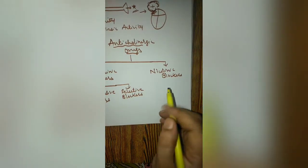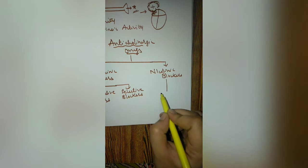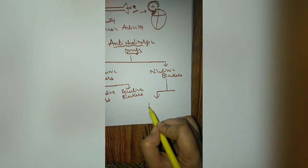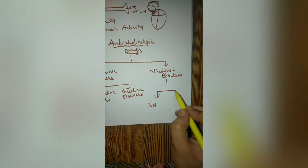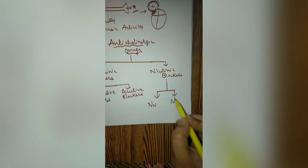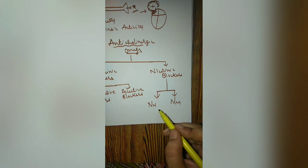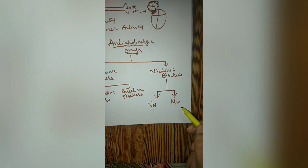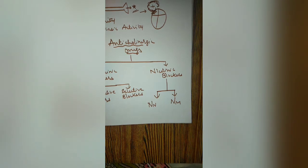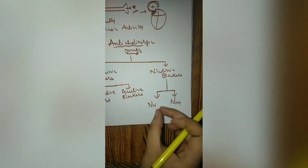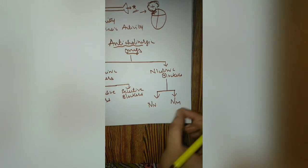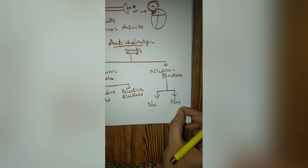Coming to the nicotinic blockers: there are two types of nicotinic receptors. The NN receptor is present in the autonomic ganglion, and the NM receptor is present at the neuromuscular junction. Drugs that block the NN receptor are called ganglionic blockers, and drugs that block the NM receptor are called neuromuscular blockers.